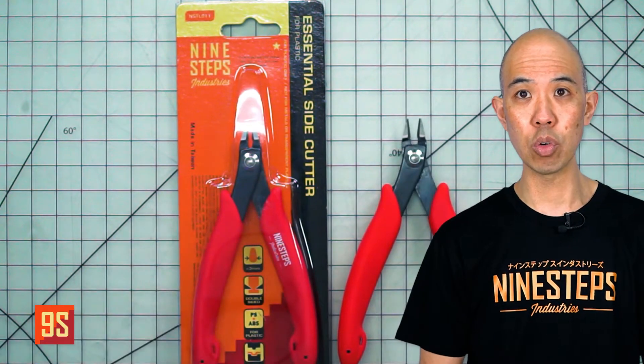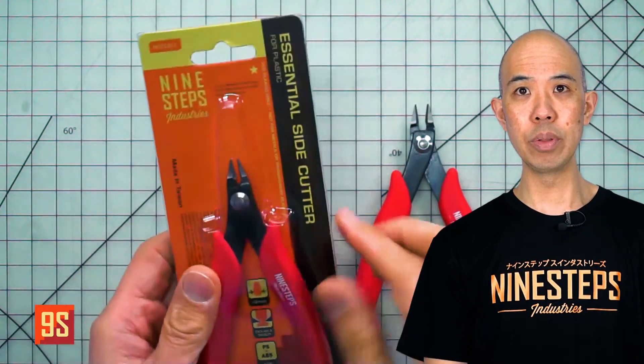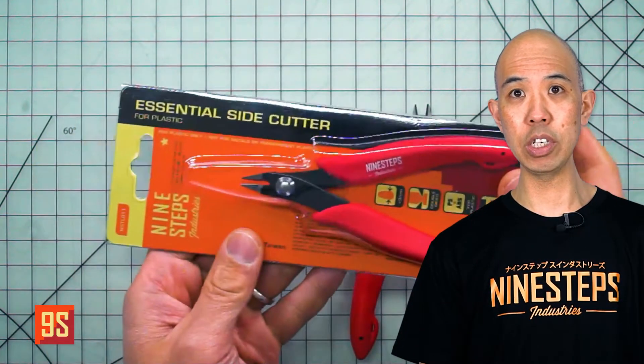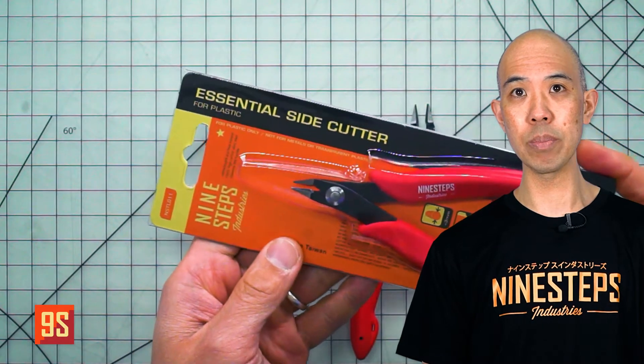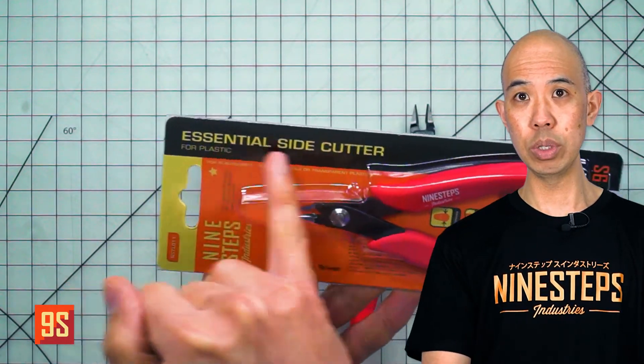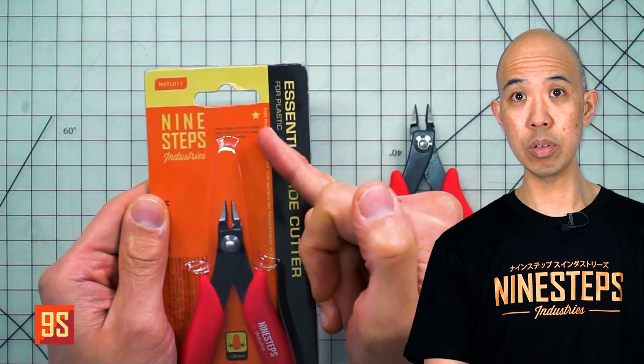Here we go with the packaging. You'll see with the packaging of Nine Steps side cutters, this is the Essential written down the side. It also has a star rating, so this one has the one star.